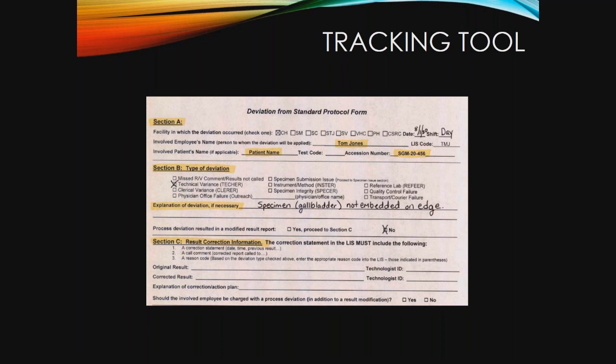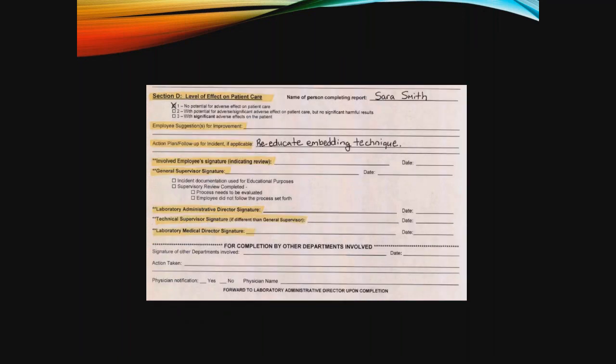This section also allows us to document if a revised report had to be issued because of the incident, giving us a way to monitor our corrected results. Section C is only completed if we do have a corrected report involved, allowing the user to document the result correction information. Section D is where the user documents the level of effect on patient care so that the significance of the deviation can be understood. The name of the person completing the report is documented, as well as any suggestions for improvement offered by the employee. This section is used to document the action plan and follow-up, and signatures are included.